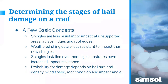Some basic concepts: shingles are less resistant to impact at unsupported edges, laps, ridges, and overhangs. When shingles bend over hip ridges, there's an unsupported area in the middle — if hail hits that, it can puncture straight through. Older weathered shingles are less resistant than new ones; a 20-year shingle at 25 years is much more susceptible to even smaller hail. Shingles installed over rigid substrates like plywood have increased impact resistance versus rigid foam, which gives a little.